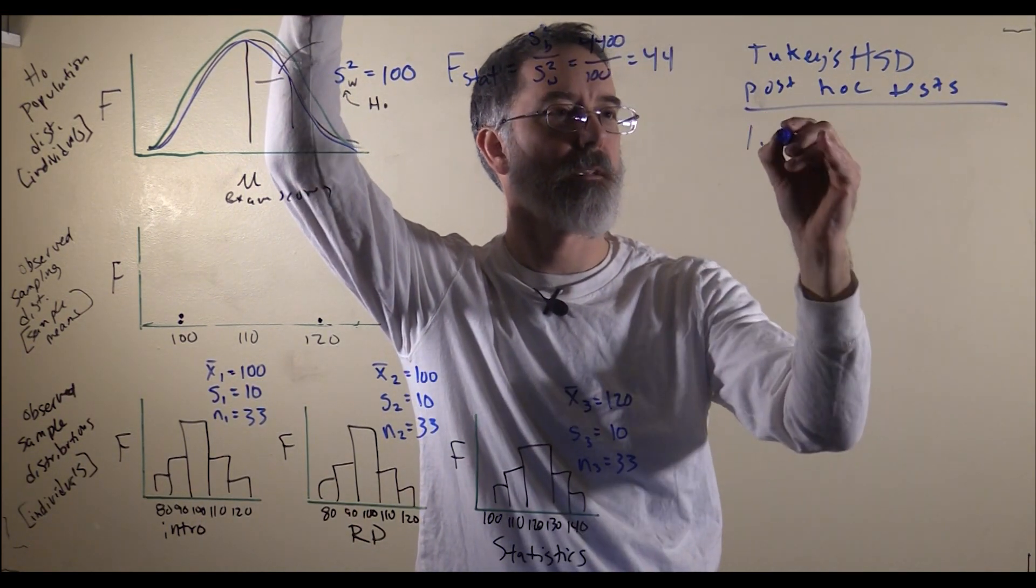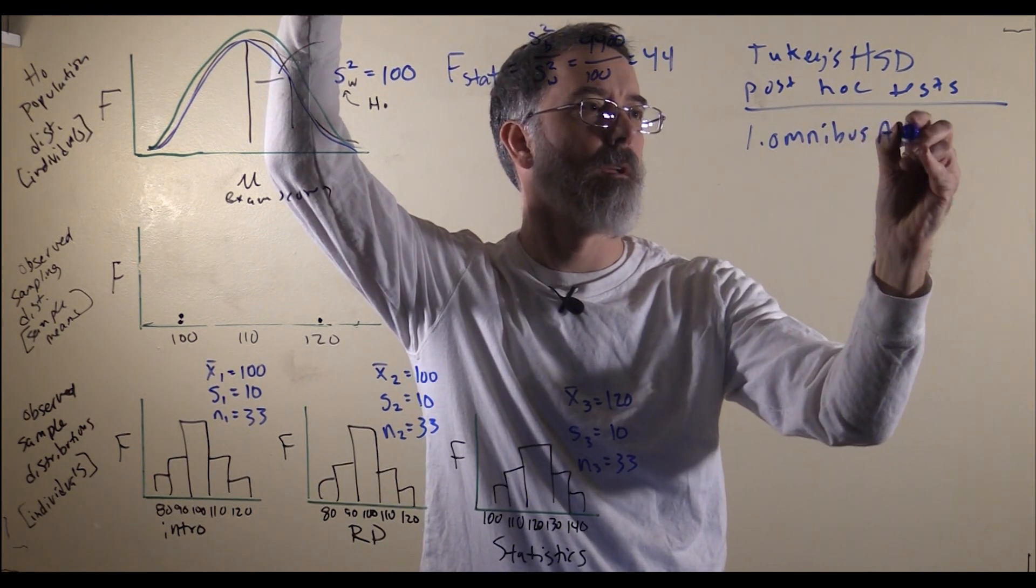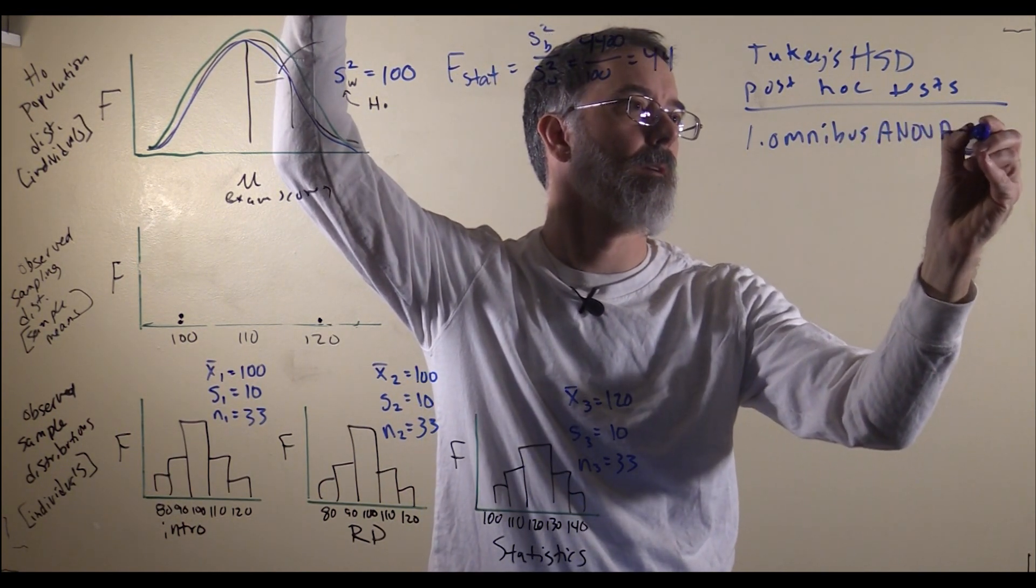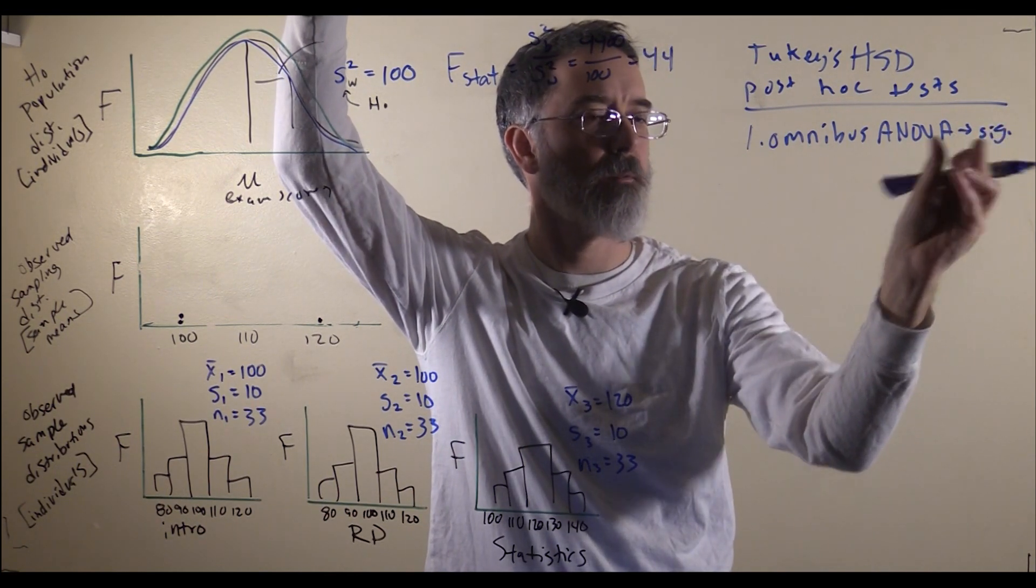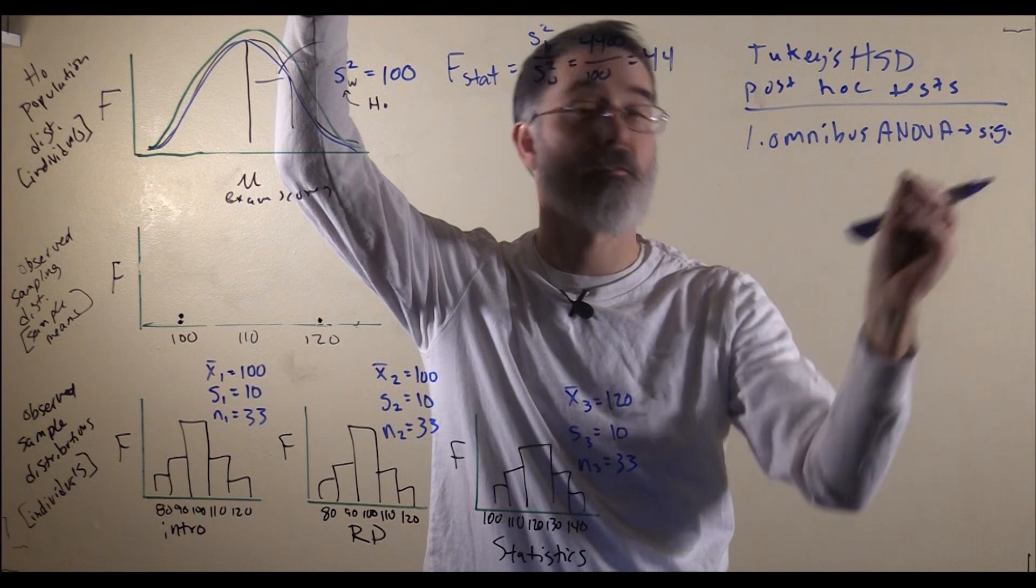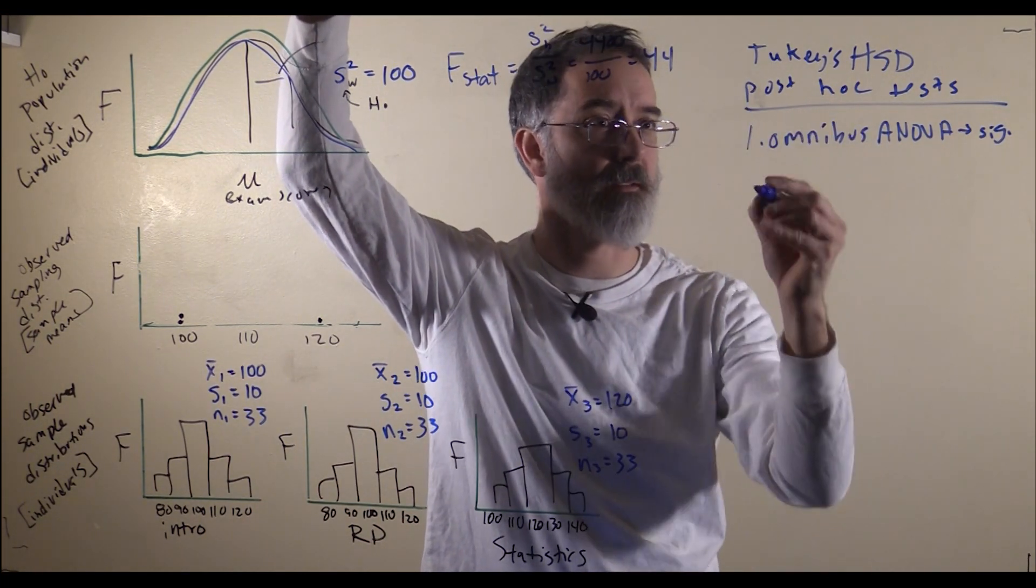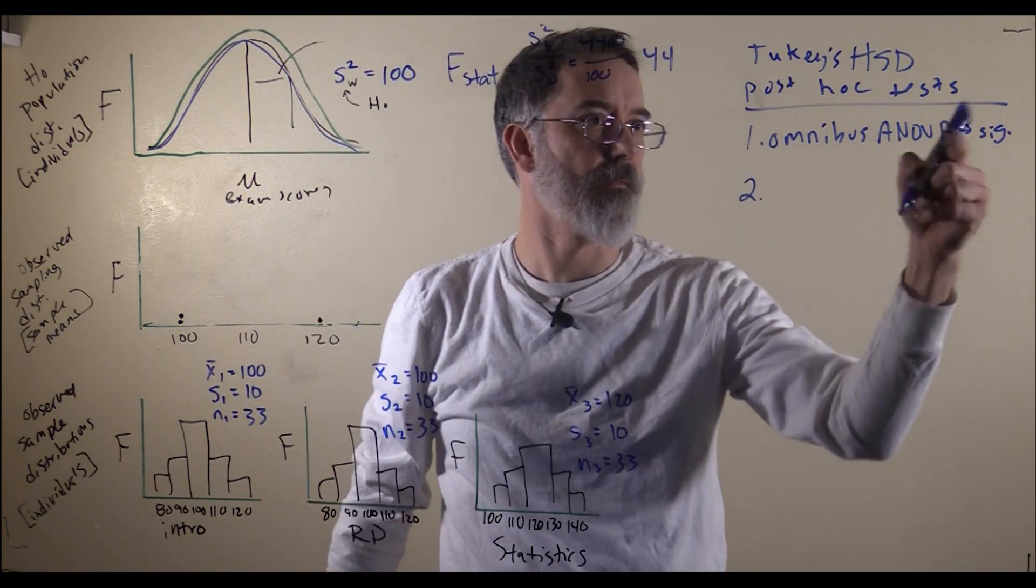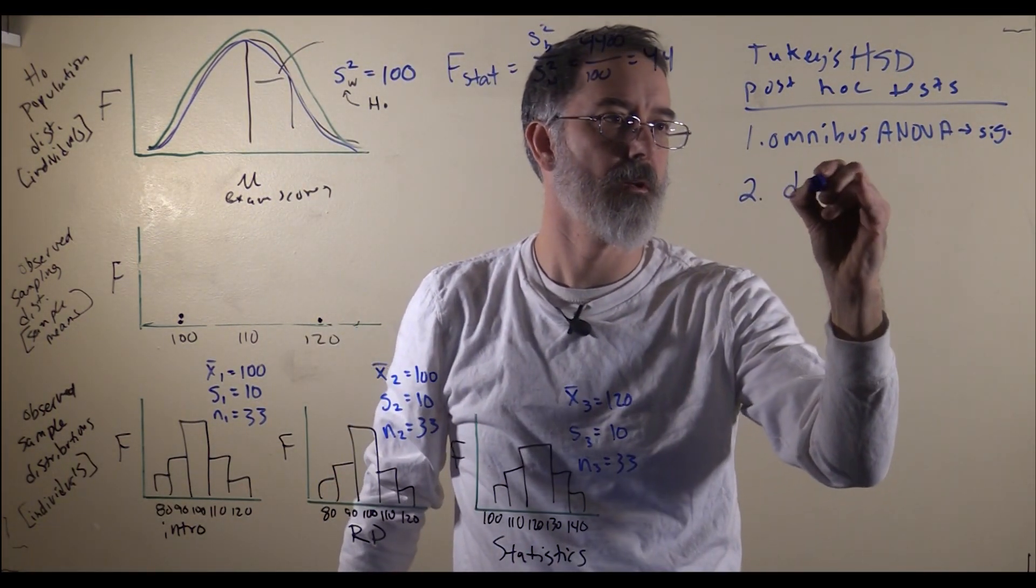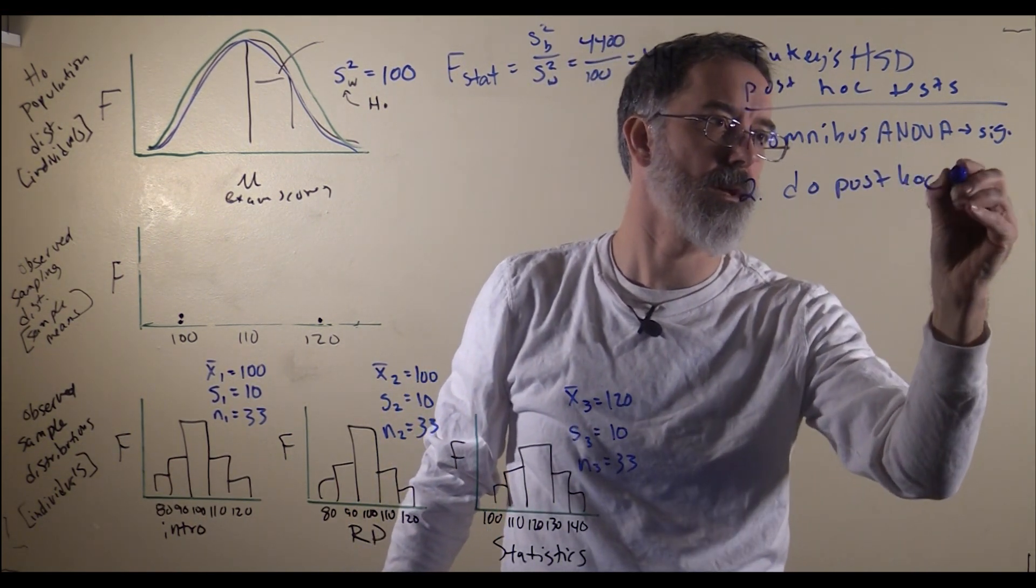Recall the first thing is the omnibus ANOVA has to be statistically significant. And that term, statistically significant, means that you have rejected the null hypothesis. You will only do these post-hoc tests if that is the case. If that is significant, you do your post-hoc test.